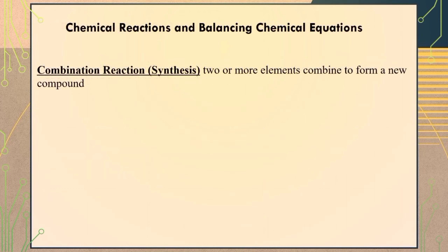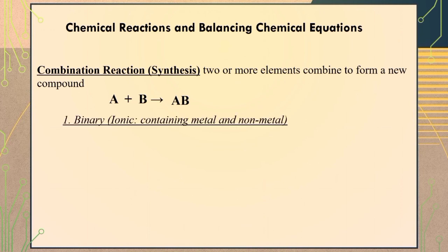Let's have combination reaction, which is also called synthesis. In this basic type of chemical reaction, two or more elements combine to form a new compound. The general equation is: A + B yields AB. Under combination reaction we also have several types, one of which is binary ionic — called binary ionic because it is mainly a combination of a metal and a non-metal. For example, when sodium combines with chlorine, it will yield sodium chloride with a chemical formula NaCl.